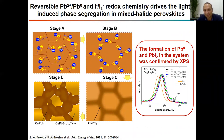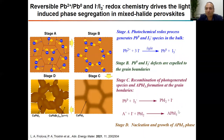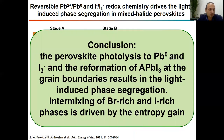We revealed the formation of traces of metallic lead and lead iodide using XPS spectroscopy and XRD, which proves all the components of the proposed aging pathway. We conclude that perovskite photolysis to metallic lead and I₃⁻, and the reformation of the pure iodide perovskite phase at the grain boundaries, results in the light-induced phase segregation, while the intermixing of bromide-rich and iodide-rich domains in the dark is driven simply by entropy gain.